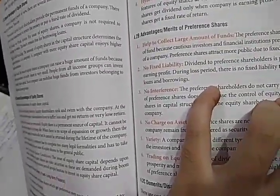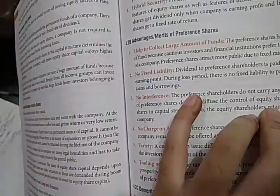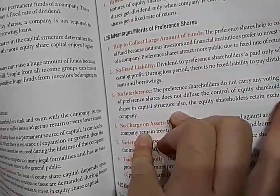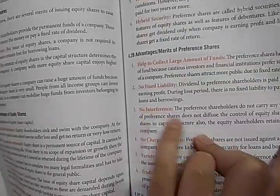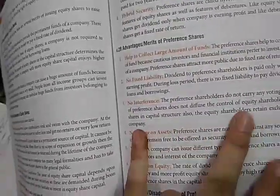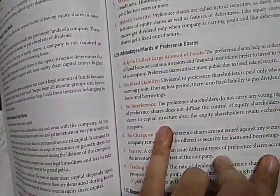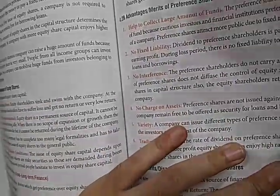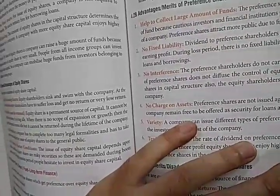Whether dividend must be paid depends on the type of preference share — there are nine types of preference shares, and some types do not require dividend payment during a loss period. Next is no interference — preference shareholders do not have any voting rights, so their presence does not dilute the control of equity shareholders. Equity shareholders retain exclusive control of the company.